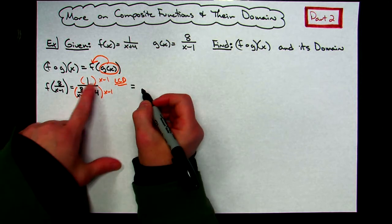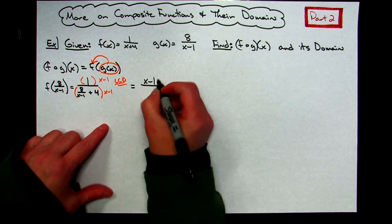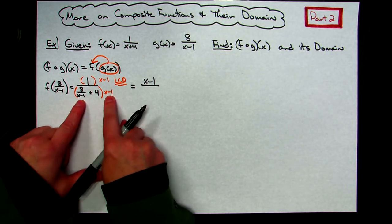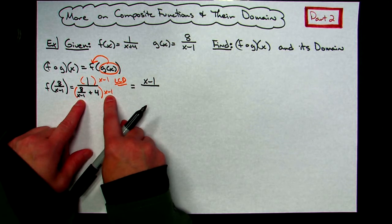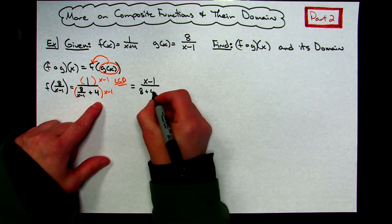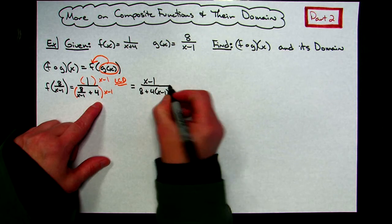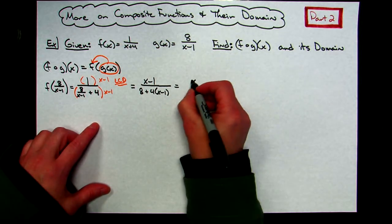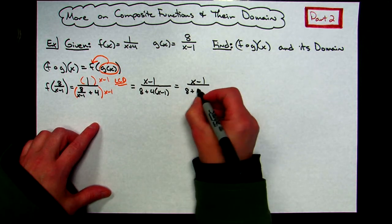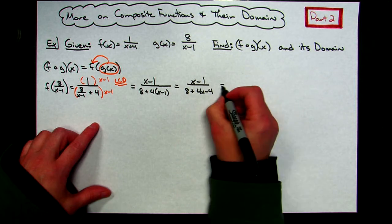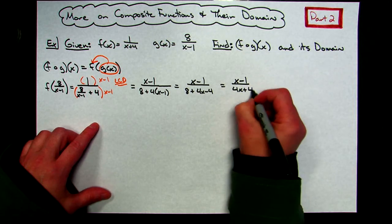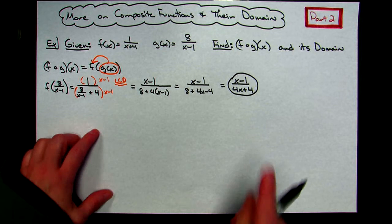I'm going to take the top and multiply it by x minus 1, and take the bottom and also multiply it by x minus 1. In the numerator, 1 times x minus 1 gives me x minus 1. Then I distribute the x minus 1 to the bottom: the x minus 1 factors cancel, leaving just an 8, and then a second distributive gives 4 times x minus 1. Simplifying further: x minus 1 on top becomes x plus 4x minus 4, and 8 minus 4 gives x minus 1 on top and 4x plus 4 on the bottom. That is my composite function.